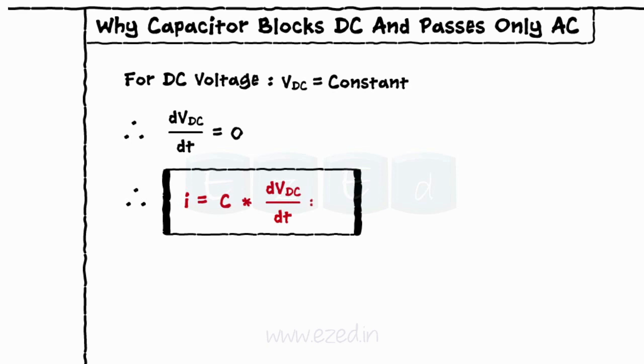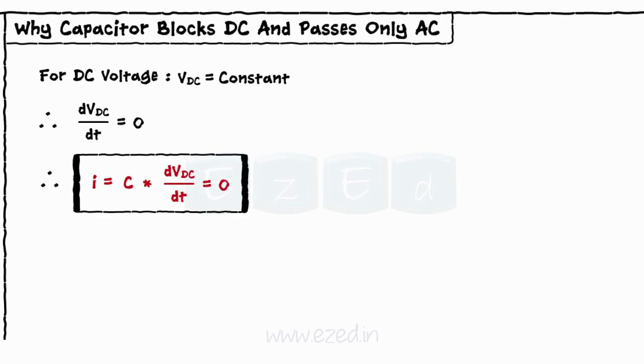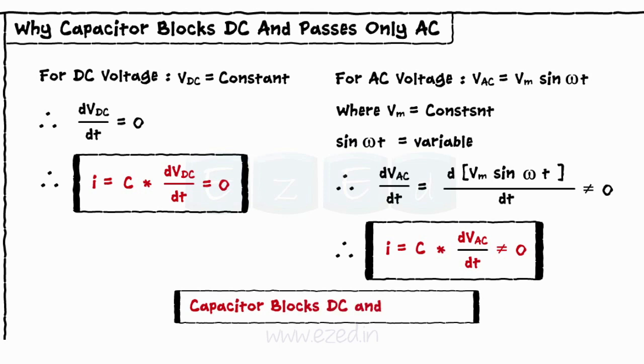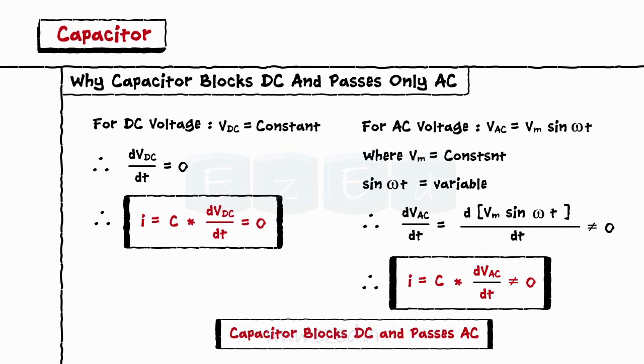But the AC voltage is given as V equals Vm sin omega t, where Vm is constant but sin omega t is a function of time. Thus, its differentiation never becomes zero. Hence, a capacitor always passes the AC signal. Hence, a capacitor always blocks DC and passes AC.